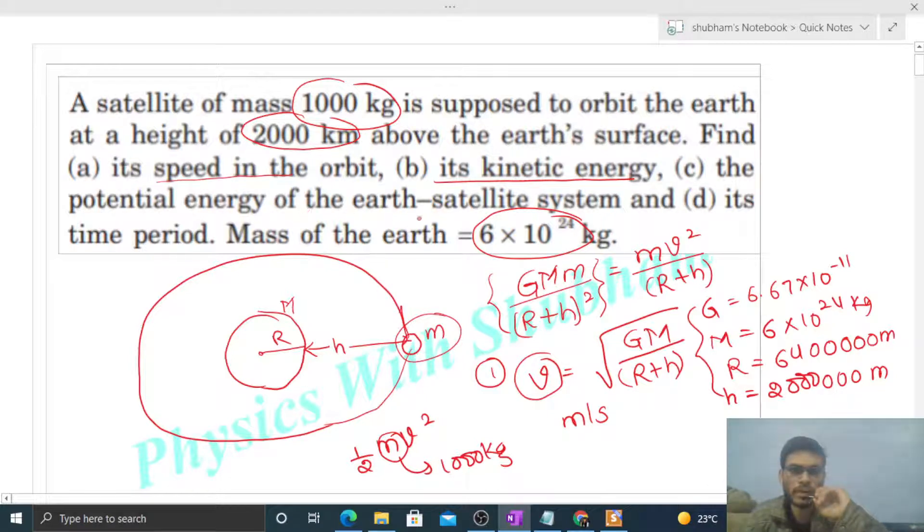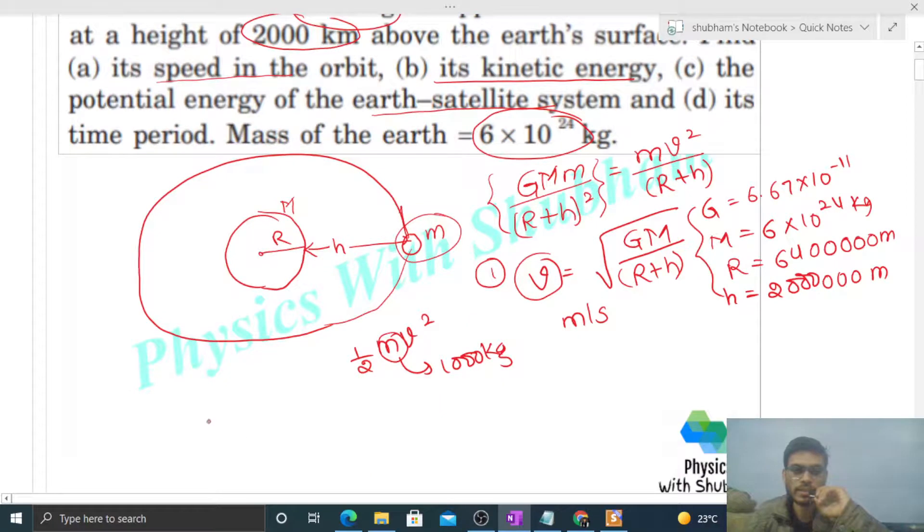Let's check the potential energy of the Earth-satellite system. Potential energy is simply minus capital G times capital M times small m divided by the distance between the center of the Earth and the satellite, that will be simply R + h. So here also we know everything, so putting the values we can find out the answer.